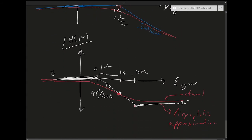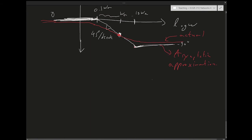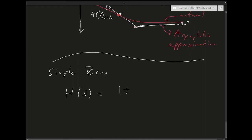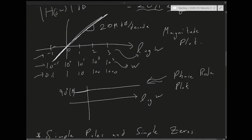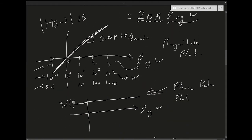This method was developed at a time before people had digital computers, so people needed quick ways to plot frequency responses for different circuits. It's a pretty ingenious way of achieving this task. Now let's go to the simple zero, which is going to be the same thing but flipped — it goes in the numerator instead of the denominator. A simple zero is: 1 + τ_1·s.